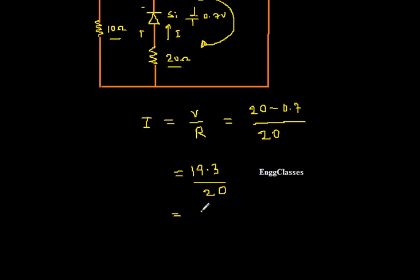So you can make use of the calculator. To be precise, we will get the answer as 0.965 amps. So that is the current that is flowing through this circuit. Correct?